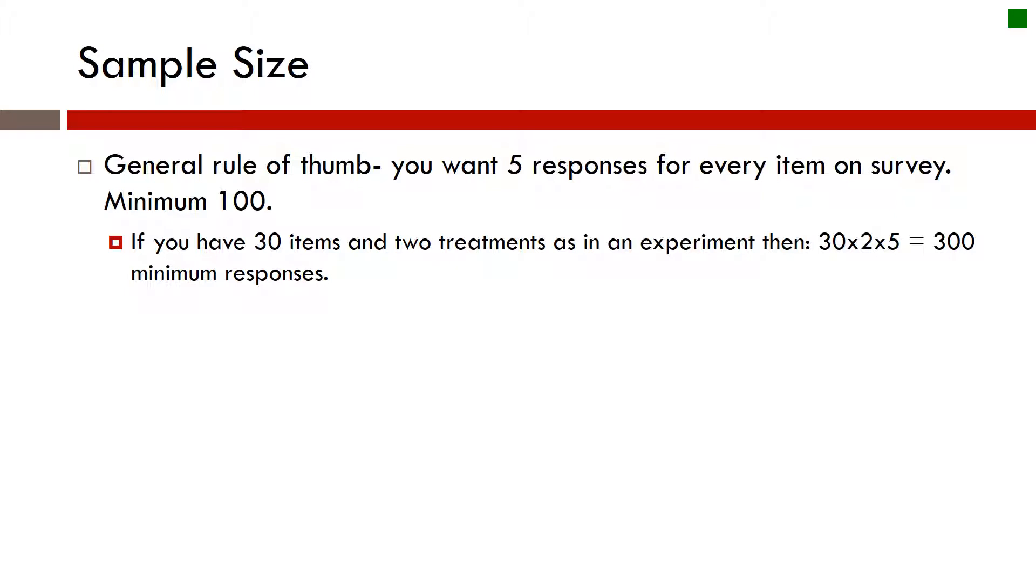So if you have two different treatments and 30 items, that means I've got a total of 60 items. So five times 60 would be 300. That would be my sample size minimum.